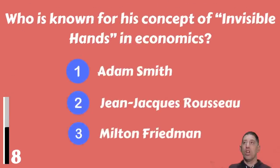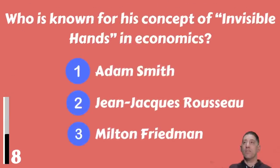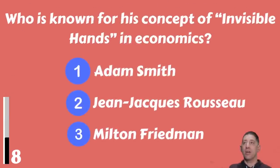Who is known for his concept of the 'invisible hand' in economics — Adam Smith, Jean-Jacques Rousseau, or Milton Friedman?